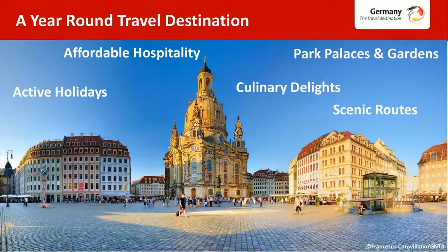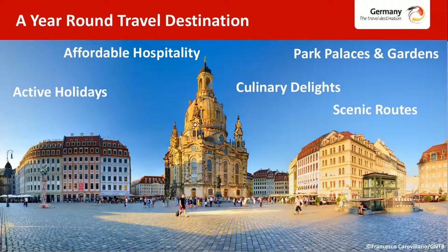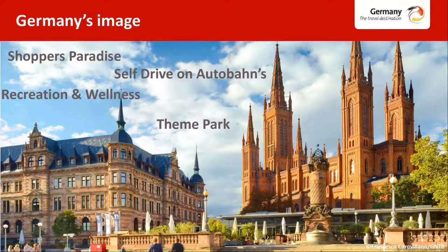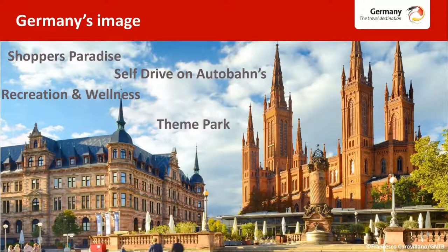Germany's scenic routes are ideal for discovering the country by car — you can choose from over 150 scenic routes, each featuring different aspects of Germany's regions. Famous ones include the German Fairy Tale Route, the Romantic Route, and the Alpine Route, which I'll cover in detail shortly. Germany also offers both scenic and adventure holidays — from hiking, biking, skiing, and sledding — so there is a surprise for everyone, whether you're a city lover or an adventure enthusiast.